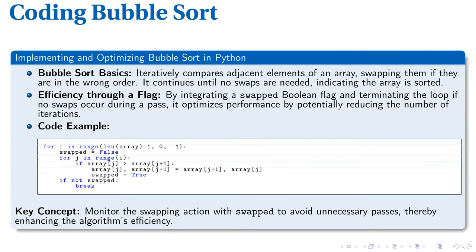Continuing to explore bubble sort, we turn to Python for implementation. Here we compare adjacent elements in an array, swapping them if they aren't in order. The critical aspect to note is the use of a swapped flag. In each pass, if no elements are swapped, it signals a sorted list and breaks the loop early, preventing unnecessary iterations.